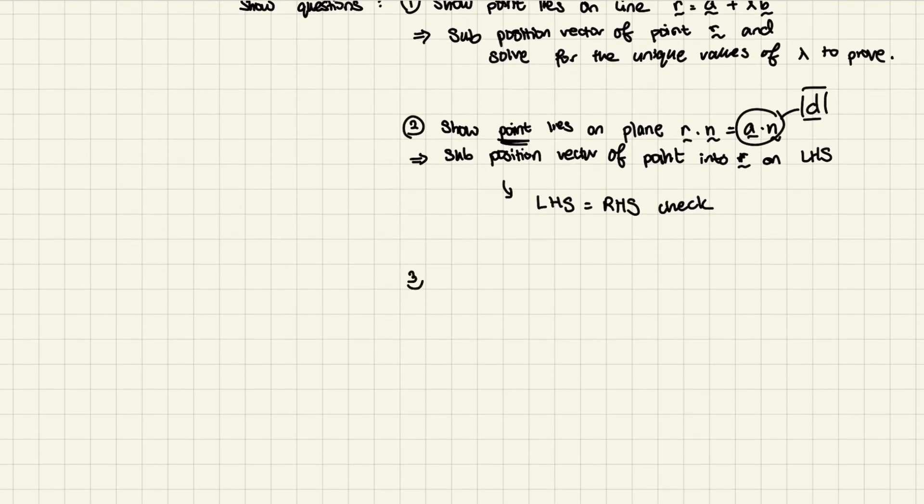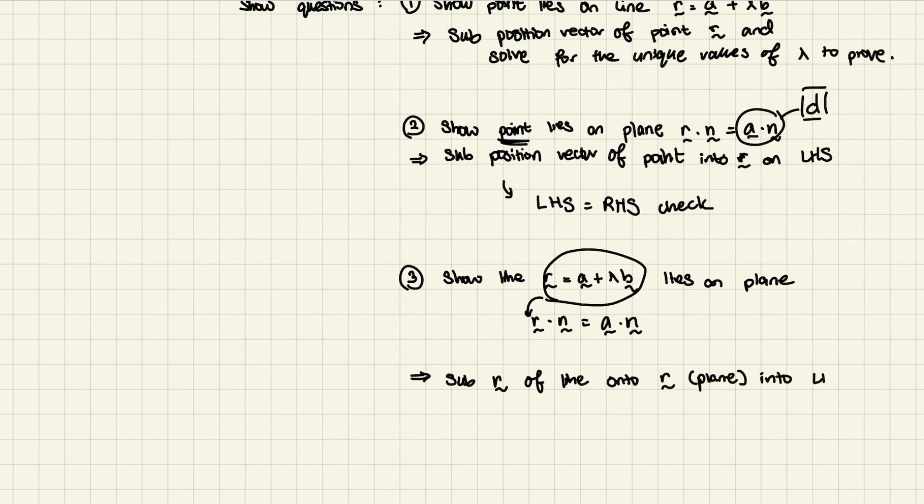The third one will be to show that a line, so back to lines again, line r equals a plus lambda b lies on the plane r dot n equals a dot n. How do you do this? It's quite simple. You just need to sub r off the line. So it's the whole thing, this whole thing over here has to go in over here. Sub r into r for the plane. And this would happen on your left-hand side as well. And after this, it's just the same thing. Just check that your left-hand side is equivalent to your right-hand side, and you should be able to get that proven answer. In general, quite a simple part also, shouldn't be too much of an issue. So this will be for your show questions. I think you guys should be quite okay with this.